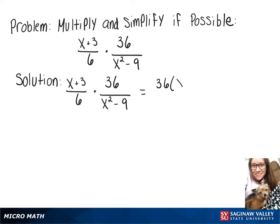So we're going to multiply across the top. We'll have 36 times x plus 3, and then multiply across the bottom so that we have 6 times x squared minus 9.